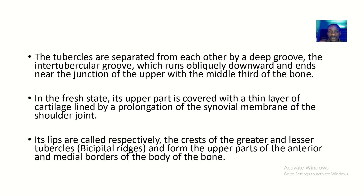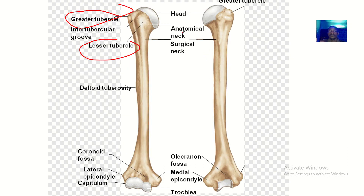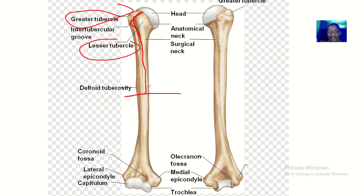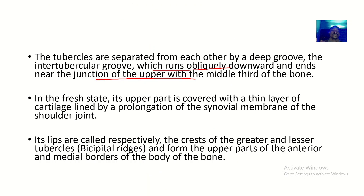The intertubercular groove runs obliquely downwards and ends near the junction of the upper with the middle thirds of the bone. As you can see in the image, the groove runs between the greater tubercle and the lesser tubercle, ending where the upper one third of the bone meets the lower two thirds.